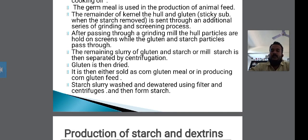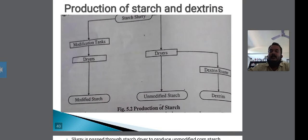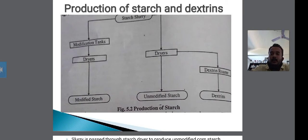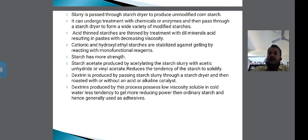The starch slurry is washed and dewatered using centrifugation, then filtered to form the starch. This is the production of starch slurry. Next is the production of starch and dextrin. The starch slurry is provided to a dryer to produce unmodified corn starch.